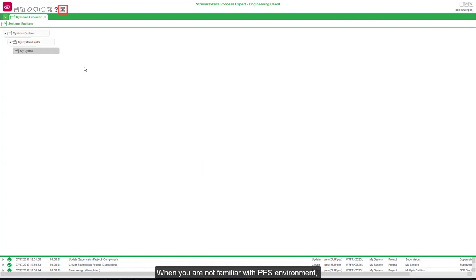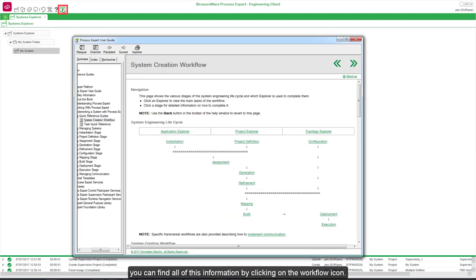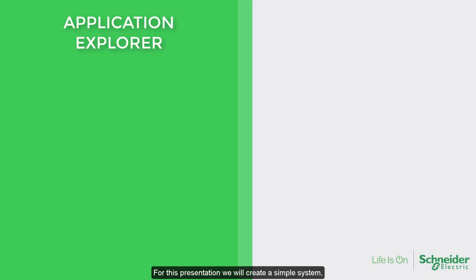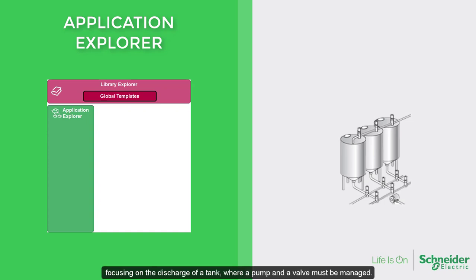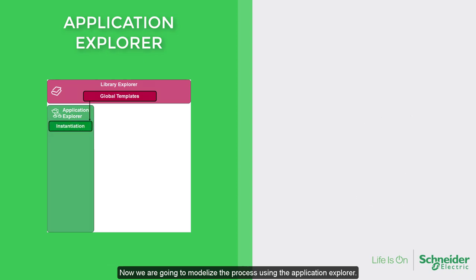When you are not familiar with PE's environment, you can find all of this information by clicking on the workflow icon. For this presentation we will create a simple system focusing on the discharge of a tank, where a pump and a valve must be managed. Now we are going to model the process using the Application Explorer.